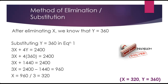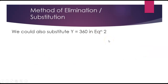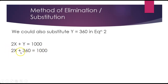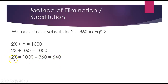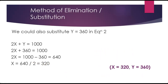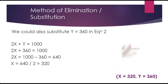Just to show that we could have also used equation 2 — not that we'd need both, since the problem would already be complete — substituting y equals 360 gives 2x plus 360 equals 1000. Subtracting 360 from both sides gives 2x equals 1000 minus 360, which is 640. Dividing both sides by 2 gives x equals 640 over 2, which is 320. So again, using the second equation, we still get the same answer: x equals 320, y equals 360.